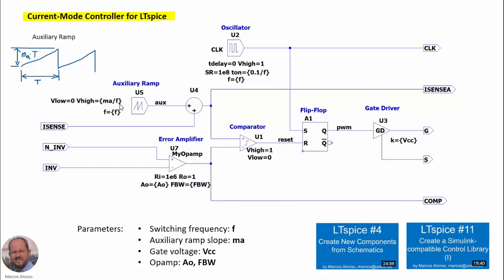Then we have the adder, we have the comparator, the flip-flop, and we are using a gate driver so we can connect directly the gate of the transistor at this point. And then we have an error amplifier which is characterized by the DC gain and the bandwidth.